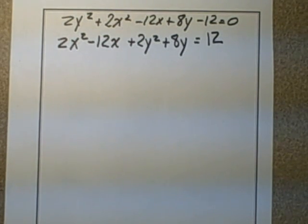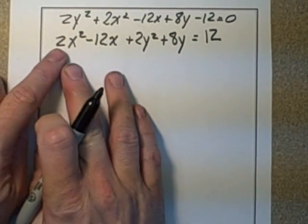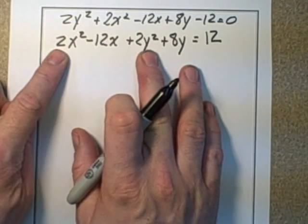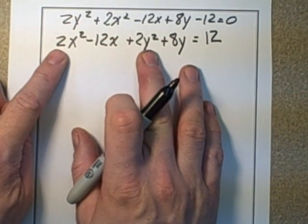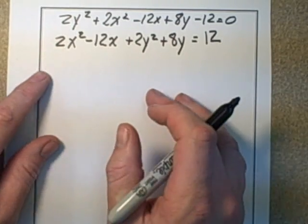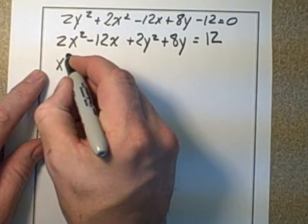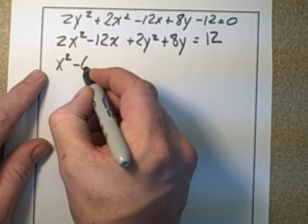Then what we do is, in order to complete the square, we have to take out and divide everything by the number that's in front of the x and y squared. So we're going to divide everything by 2. So dividing by 2, we've got x squared minus 6x.